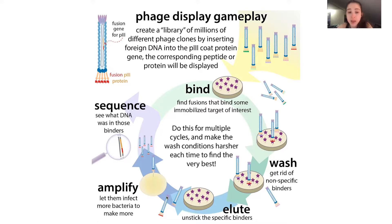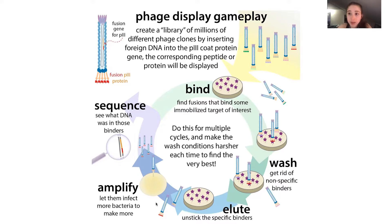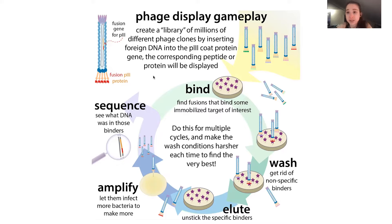You typically want to make a lot more of them because you're going to want to isolate their DNA, and you want to have lots of copies. You can use techniques to make more copies in vitro, but you want to have more to start with so it doesn't get lost in the noise. In the amplify step, you let these phages infect more bacteria to make more. That's the great thing about these phages — they're already good at getting into bacteria and getting bacteria to make lots of copies of them.